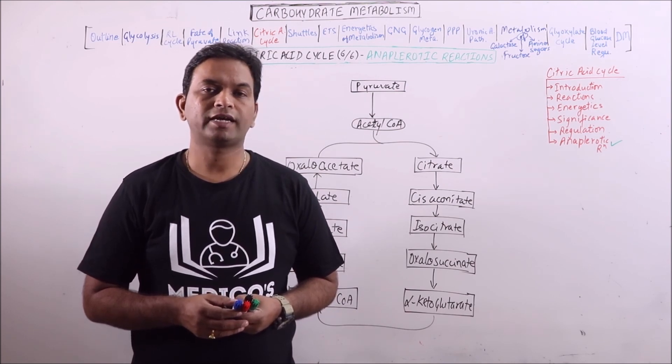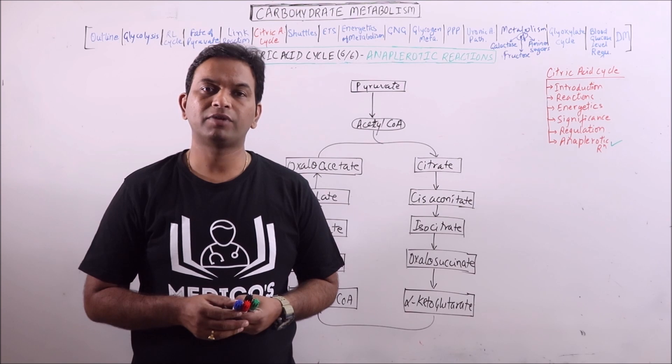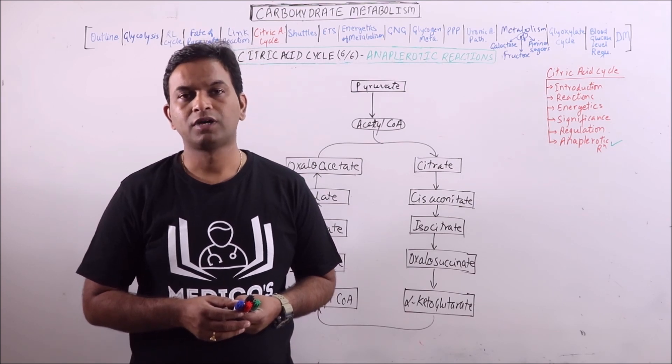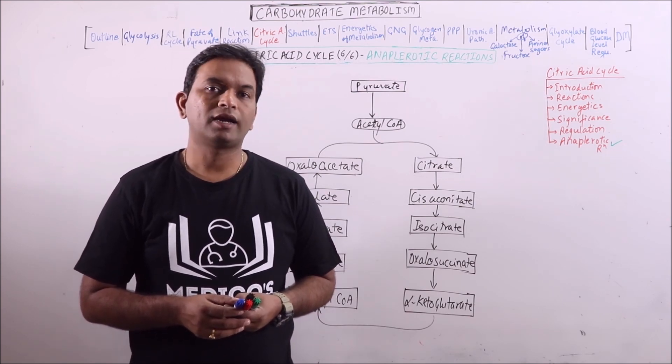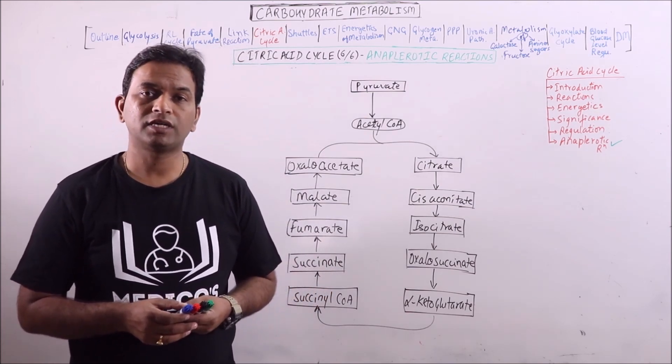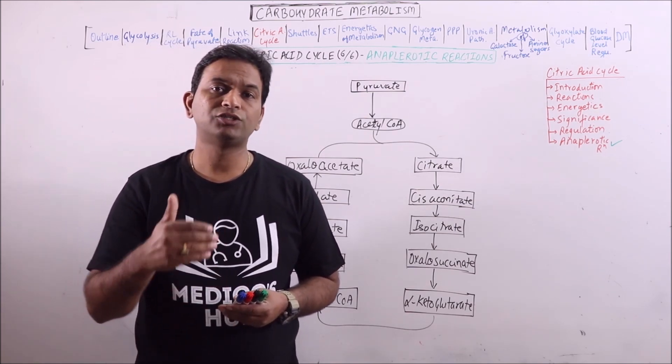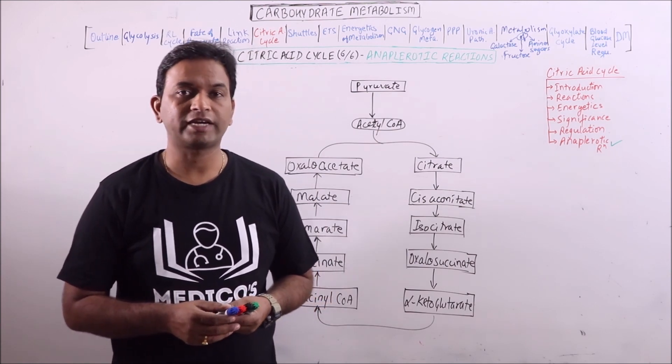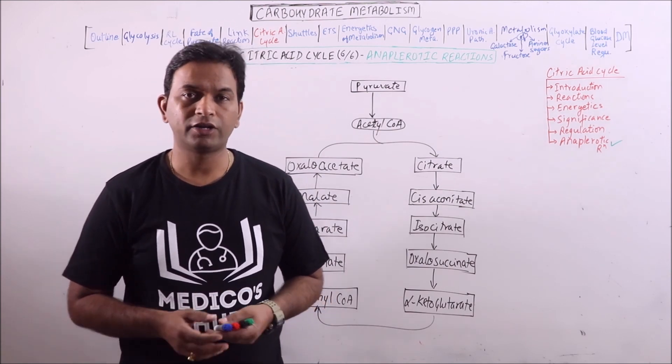This is my sixth lecture on citric acid cycle and I am going to discuss the anaplerotic reactions in this video. Ana means to make while ceta means to break. So these anaplerotic reactions are basically the reactions which will ensure the replenishment of the intermediates of citric acid cycle so that it may continue.